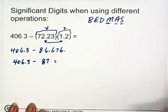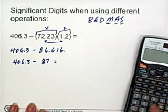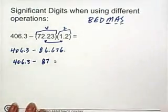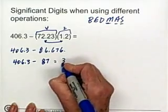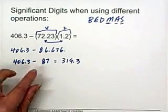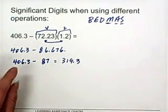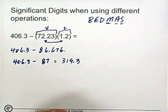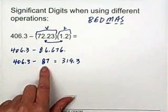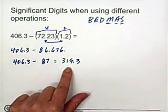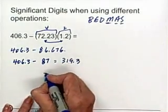That becomes 406.3 minus 87, which equals 319.3. Now if you remember, when we're subtracting, we're paying attention to decimal places. And the answer has to have the same number of decimal places as the quantity with the least number of decimal places, and that is the 87. 87 has zero decimal places. So then this answer must have zero decimal places. So our answer here would have to be 319.